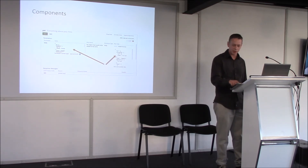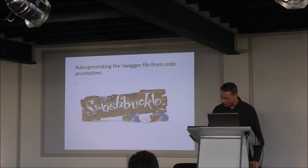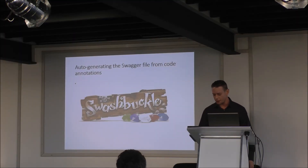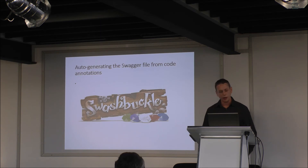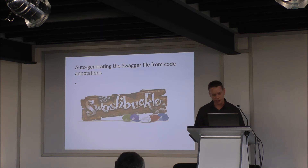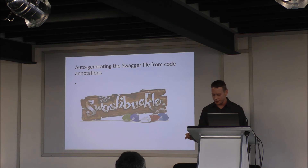Instead of coding a Swagger file by hand, you can use automatic annotations in your program code. One NuGet package that helps us do this in .NET is called Swagger. There are also many other Swagger libraries for different code bases.